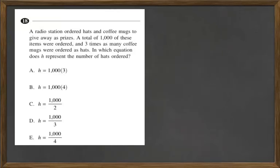A radio station ordered hats and coffee mugs to give away as prizes. A total of 1,000 of these items were ordered, and three times as many coffee mugs were ordered as hats. In which equation does H represent the number of hats ordered?